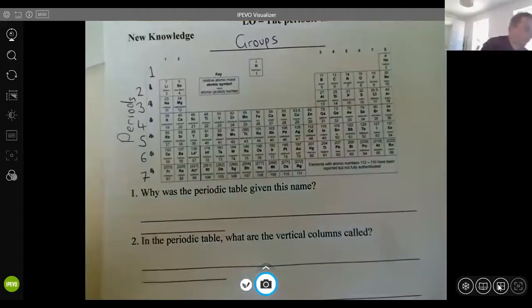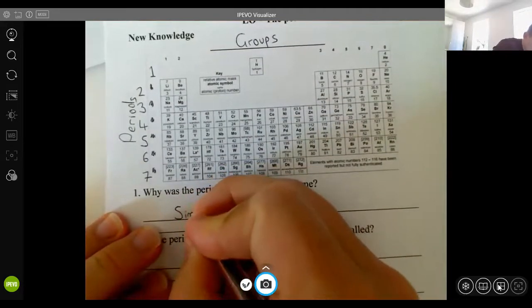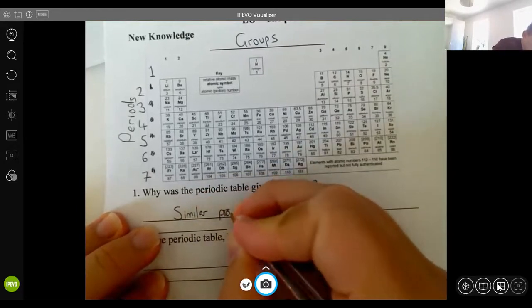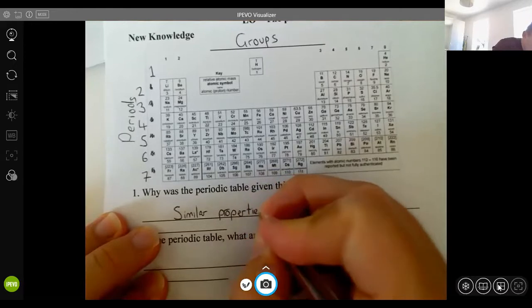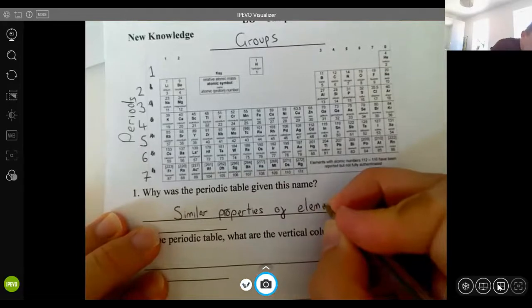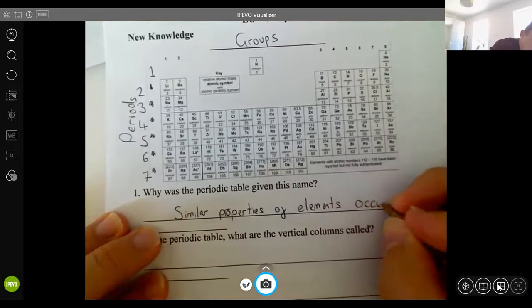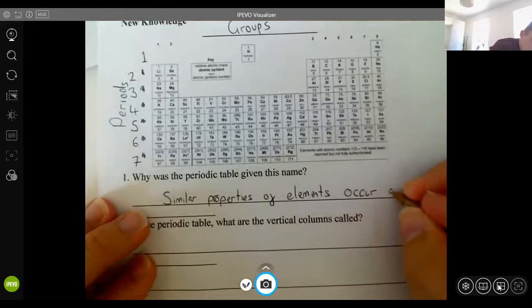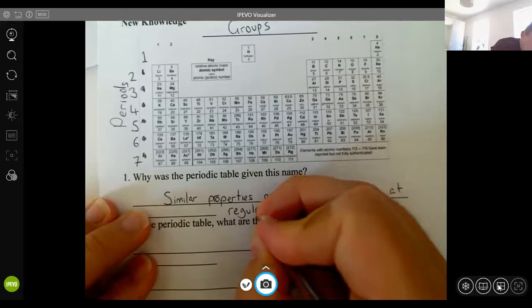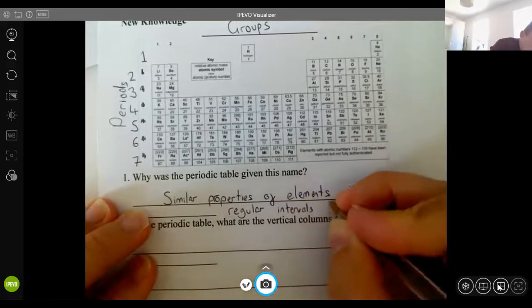But why is the Periodic Table given its name? And that is because similar properties of elements occur at regular intervals. Regular intervals, we could actually describe that as periodically.